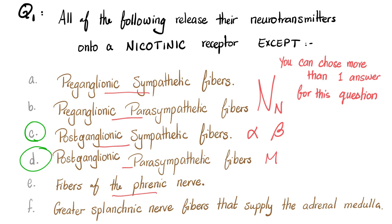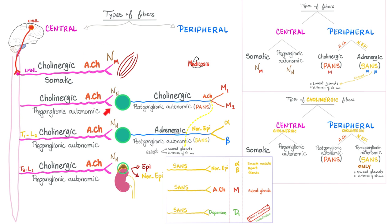How about postganglionic parasympathetic fibers? Muscarinic receptors. Fibers of the phrenic nerve. The phrenic nerve supplies the diaphragm, which is a skeletal muscle. So it uses nicotinic sub M. How about greater splanchnic nerve fibers that supply the adrenal medulla? Also nicotinic. Because the adrenal medulla is treated like a ganglion. So for this question only, we have two correct answers, C and D. And here is this famous slide. Please pause and review.